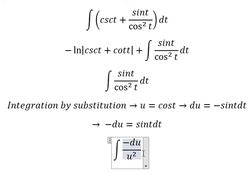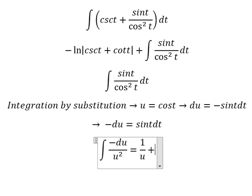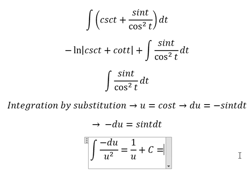And the integral of this one gives us 1 over u plus c. u is cosine t.